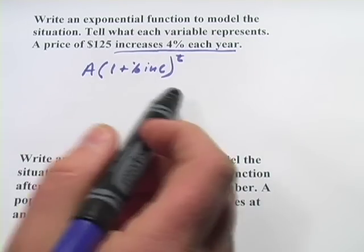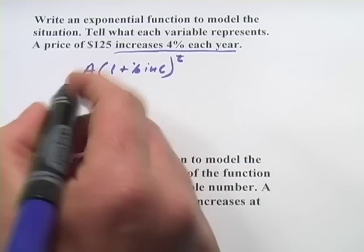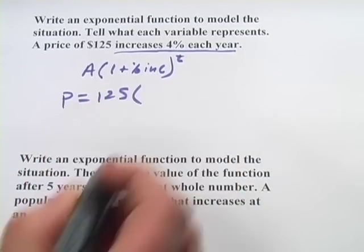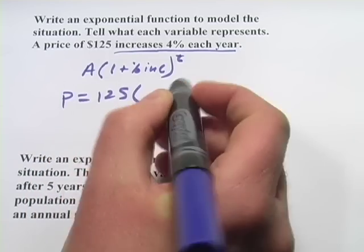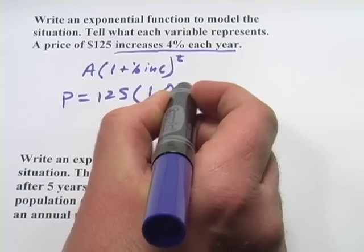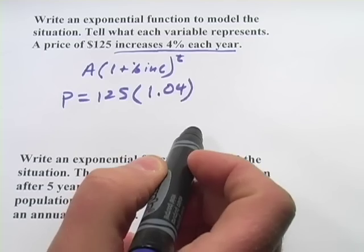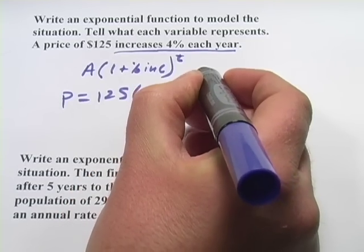We can write that this way. Ours is a price, so we're going to say P equals, and the initial amount is $125. Now 1 plus the percent increase, that's going to be 1.04. Converted 4% to a decimal, so that's the 0.04, and let's put X as the number of years.